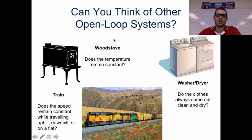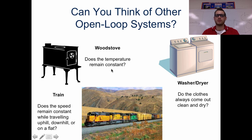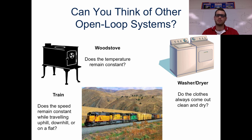Let's think of some other open loop systems. A wood stove — you can throw more wood in, take some wood out, or close it. But for the most part, there's no way to precisely control the temperature of the wood stove. It stays wherever the wood is — if there's more wood burning, it gets hot; less wood and it gets cold, constantly repeating.